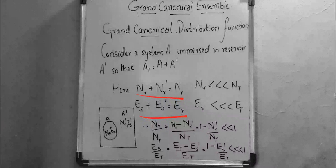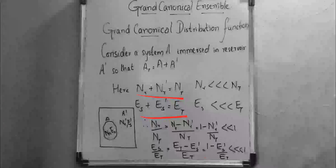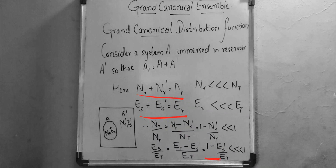That is equal to 1 minus N_R' / N_T, which is much less than 1. Similarly, E_S / E_T equals (E_T minus E_S') / E_T, which equals 1 minus E_S' / E_T, which is again much much less than 1.